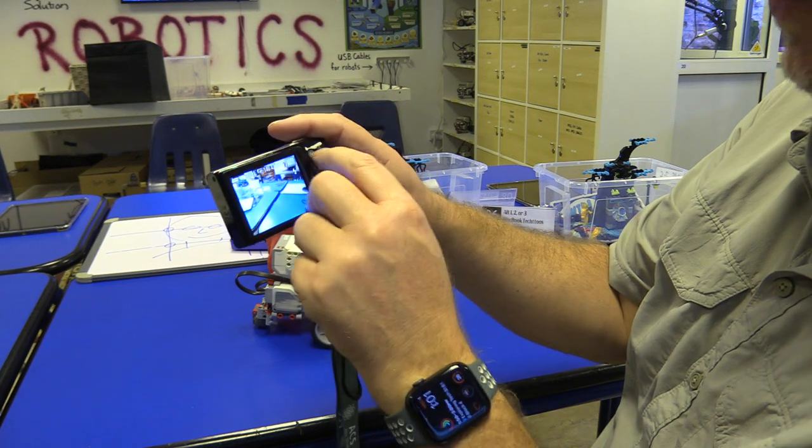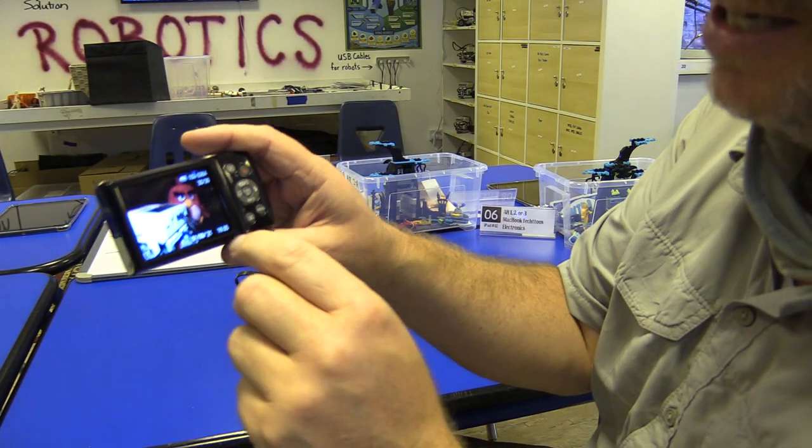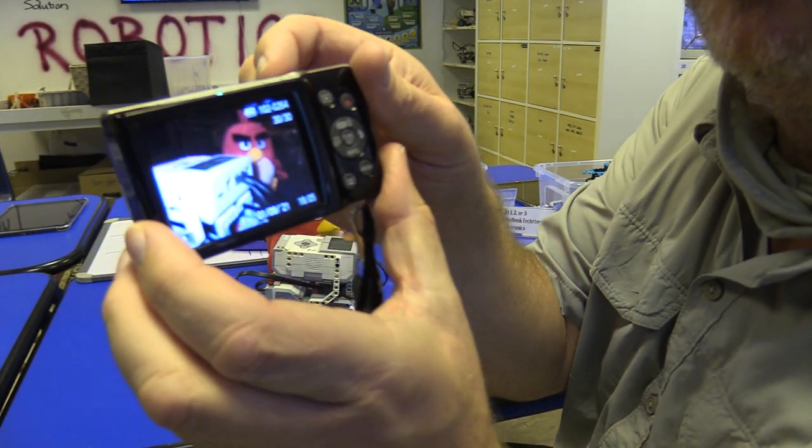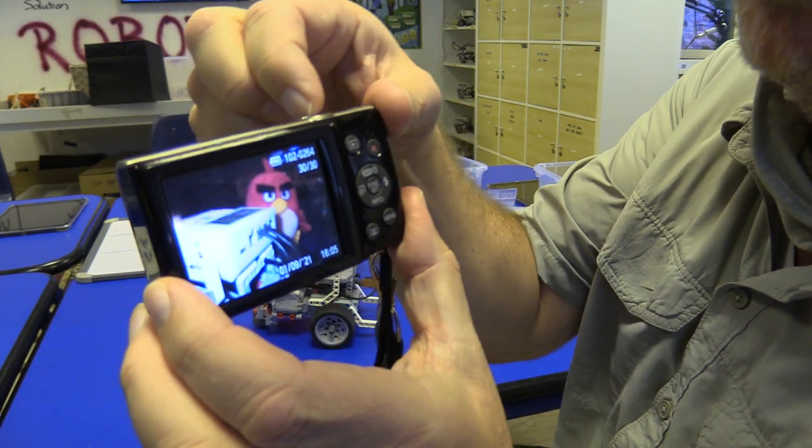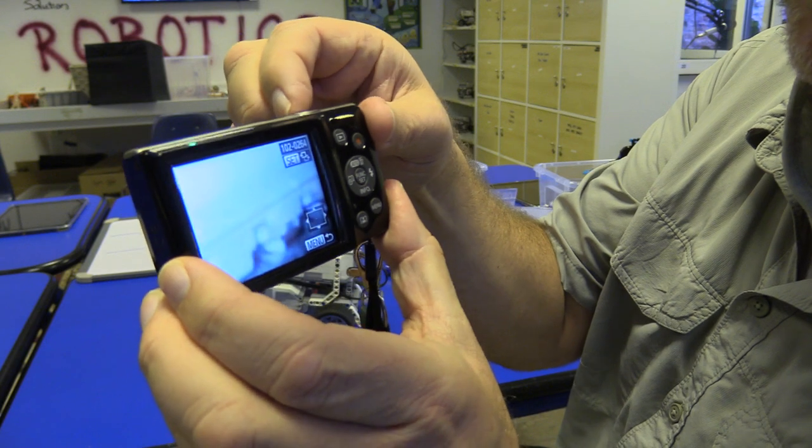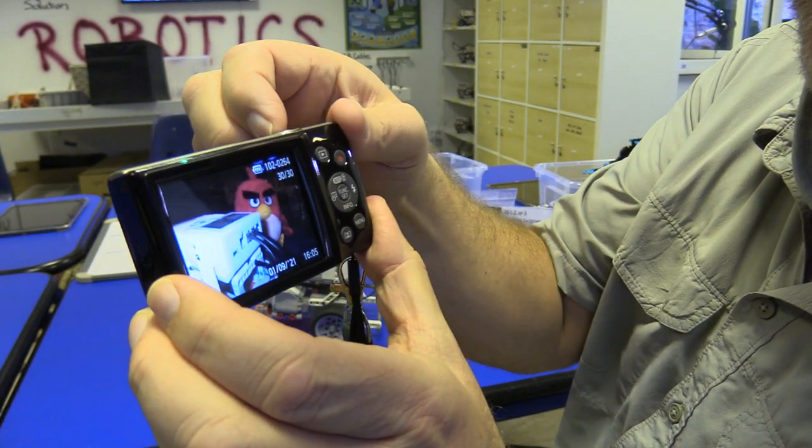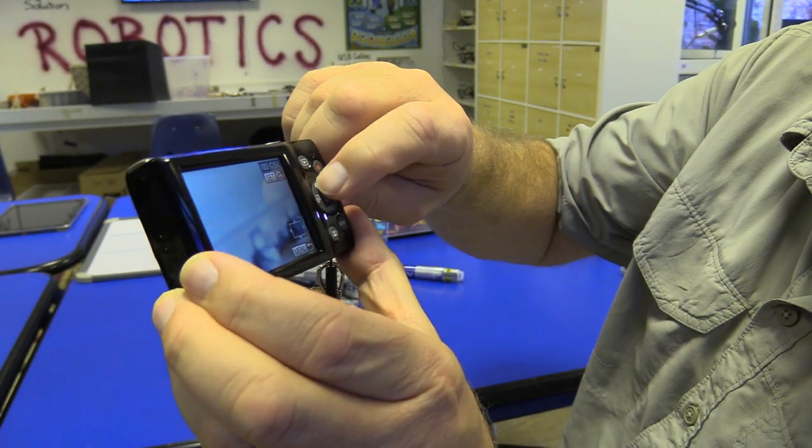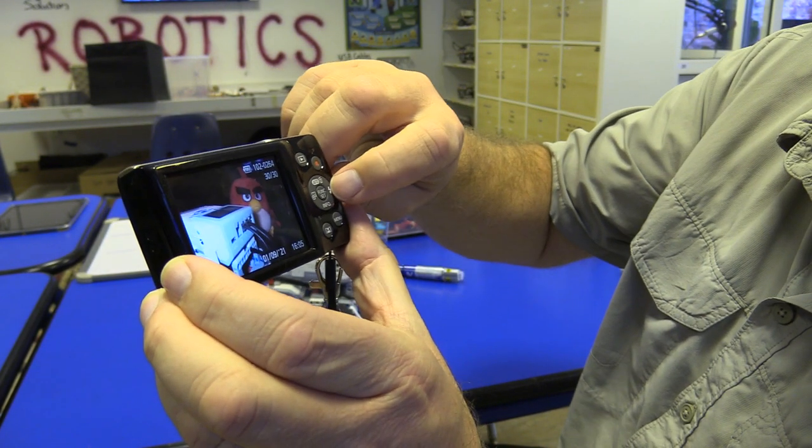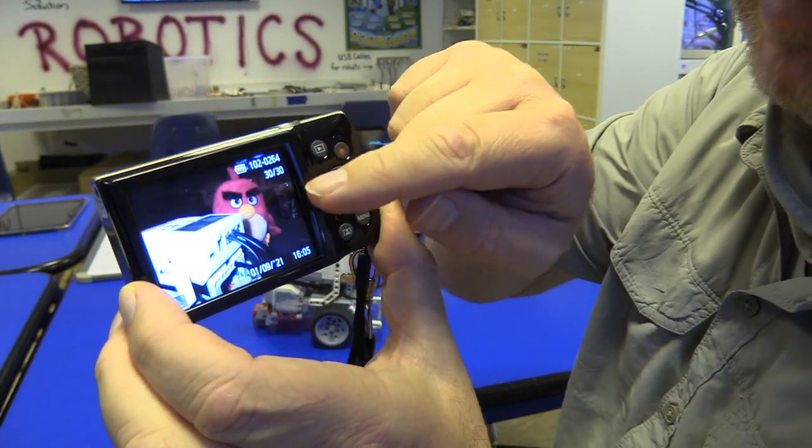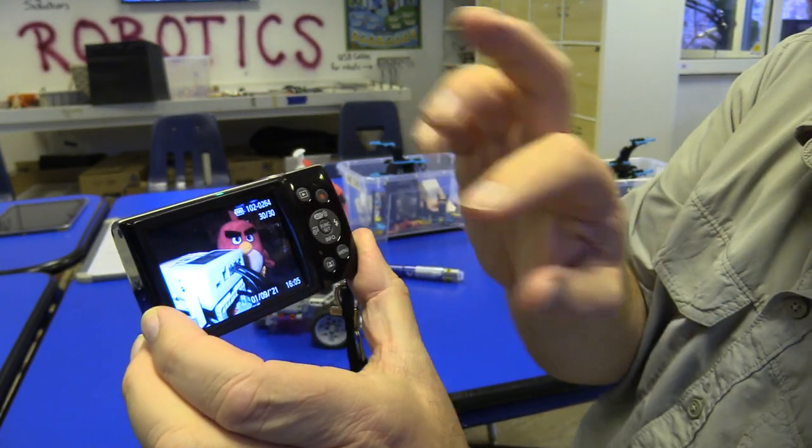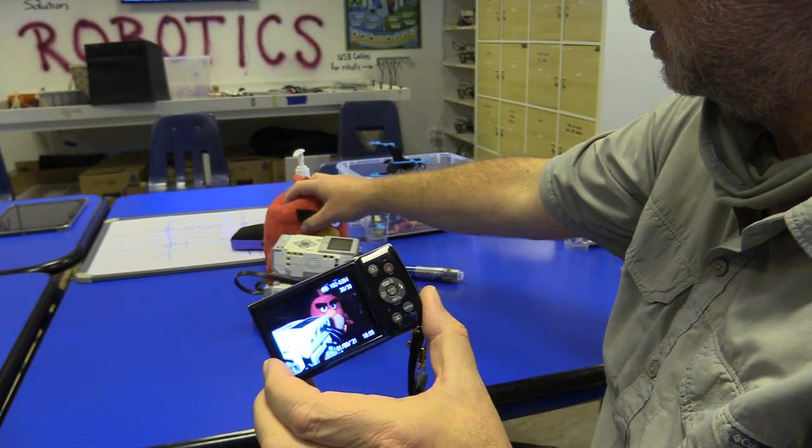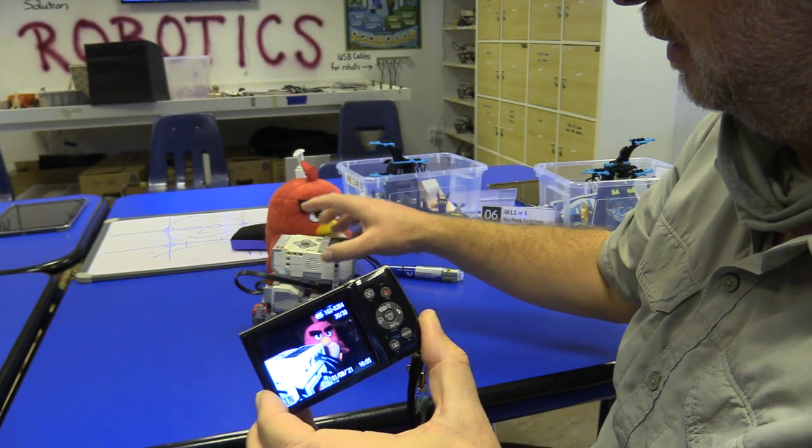That was kind of weird with the flash, but look at how well that turned out. You can see that the robot is actually out of focus, but the angry bird is completely in focus. That's exactly what we wanted. That's the opposite of the first one. The first one, the robot was in focus and the angry bird was out of focus, and this one was the reverse of that.